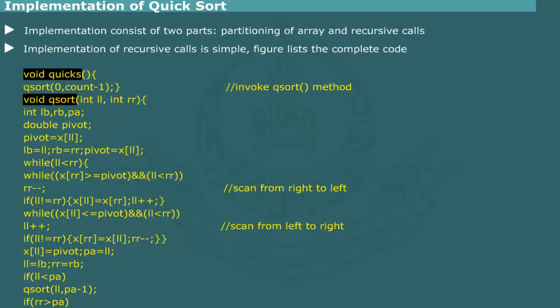It consists of two methods named quicks and qsort. The function quicks simply passes the upper and lower bounds of the array x to be sorted. The qsort is the main operative method for the quick sorting. It includes integer variables lb, rb, and pa to hold the current values of lower and upper bounds and the index of the pivot. The variable pivot is assigned the leftmost element in the subarray.